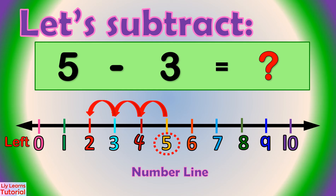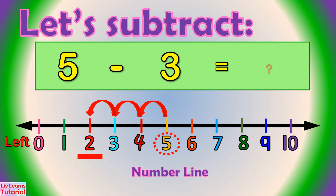In what number did we land? Yes, you're right — 2. Therefore, 5 minus 3 equals 2.